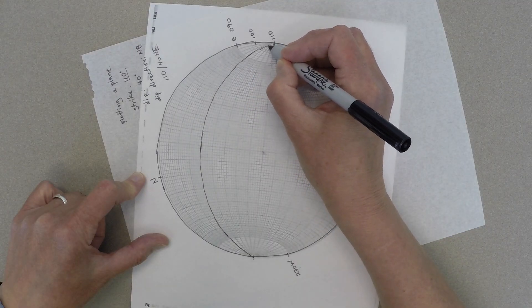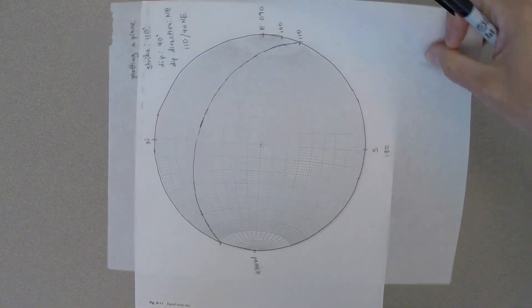The bold of the curve always points in the direction of the dip direction, in this case, towards the northeast.